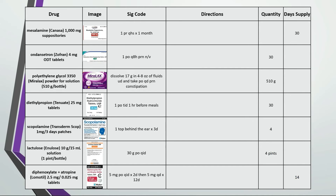Moving on to some gastro drugs and our last set for this video. For suppositories, remember to include 'unwrap' in the directions because a lot of people have never used suppositories. So this is: unwrap and insert one suppository every bedtime for one month — a 30-day supply is 30 suppositories. For Zofran ODT tablets, this is dissolve one tablet by mouth every eight hours as needed for nausea and vomiting. We could use up to three tablets a day, so 30 divided by 3 is a 10-day supply.